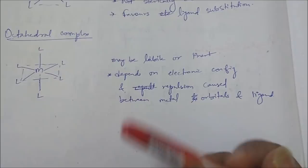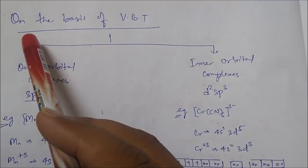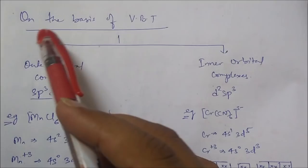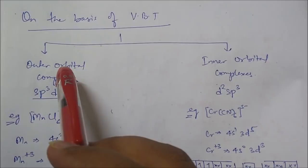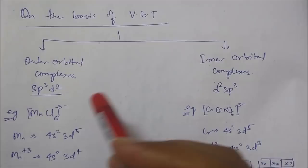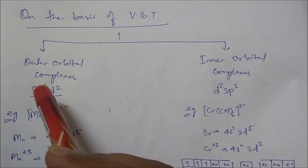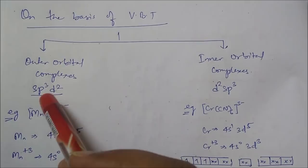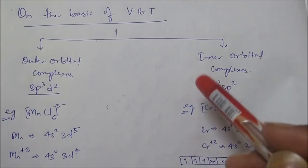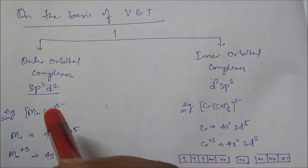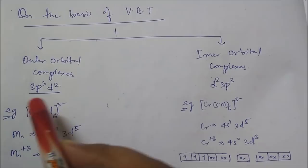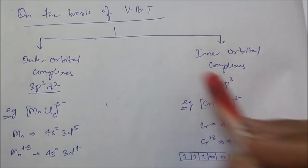Initially, this was explained using Valence Bond Theory (VBT). VBT says there are two types of octahedral complexes: outer orbital complexes, which involve outer orbitals with sp3d2 hybridization, and inner orbital complexes, which involve inner d orbitals with d2sp3 hybridization. The difference is that outer orbital complexes use the nd orbital (e.g., 4d), whereas inner orbital complexes use the (n-1)d orbital (e.g., 3d), along with 4s and 4p.